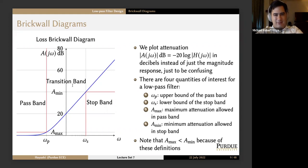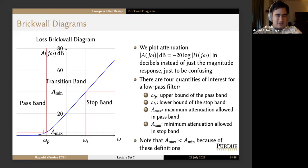In between we have our transition band. We get four points of interest: omega_p, omega_s, a_max — the maximum attenuation allowed in the pass band — and a_min, the minimum attenuation allowed in the stop band. And just to be confusing, a_max is less than a_min because of these definitions.